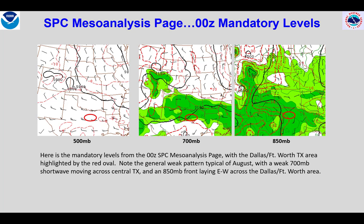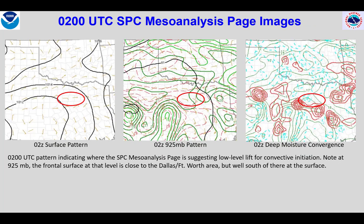At 700 millibars and 500 millibars, we see a weak, slow-moving shortwave trough approaching the Dallas-Fort Worth area of northern Texas. The Mesoanalysis surface plot indicates the frontal boundary to be well south of Dallas-Fort Worth, with the metro area highlighted by the red oval. It seems that the frontal surface at 925 millibars is very close to Dallas-Fort Worth. Deep layer moisture convergence at 2Z appears to be focused just south of that area.